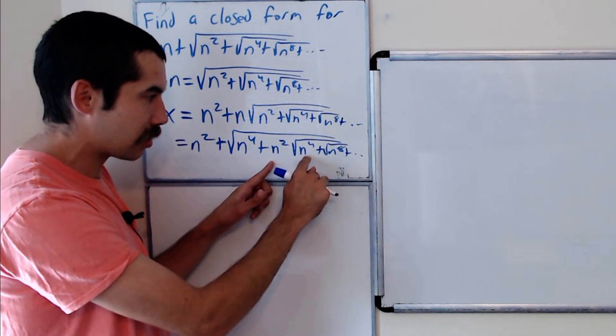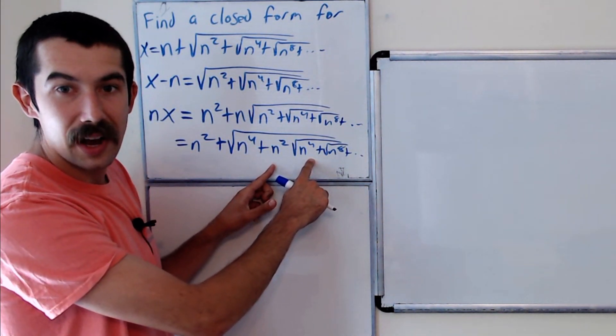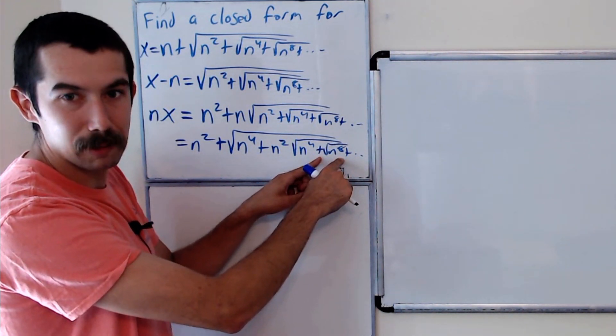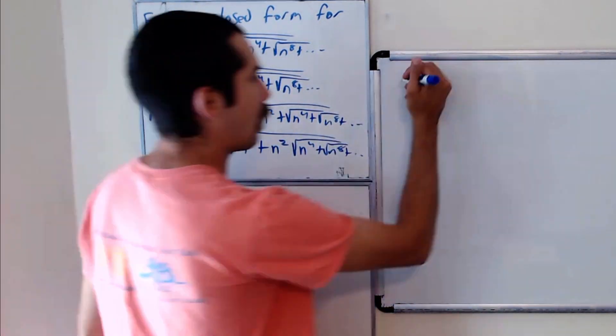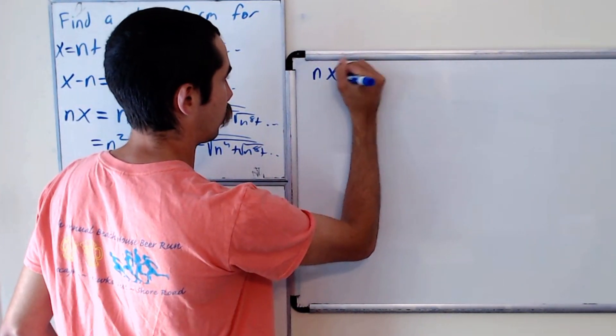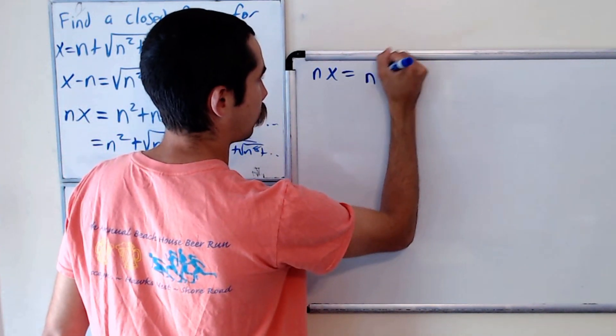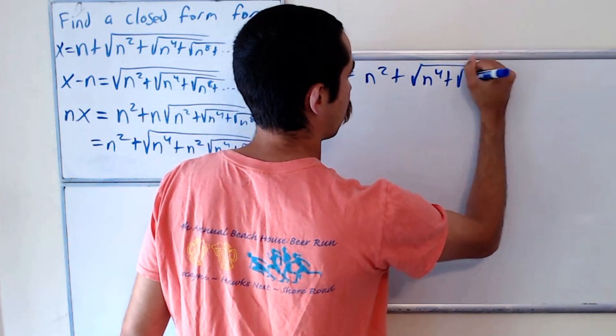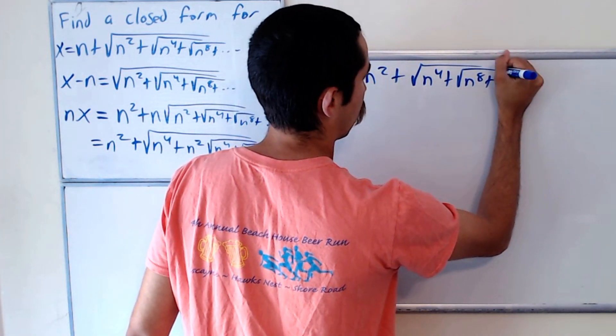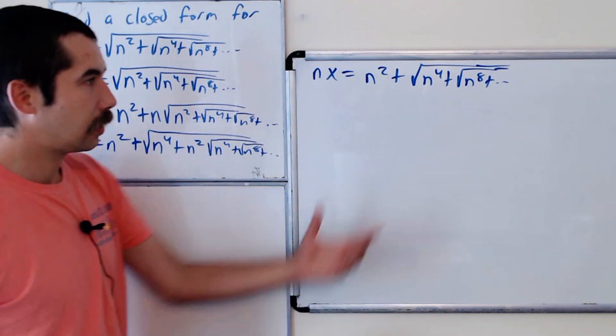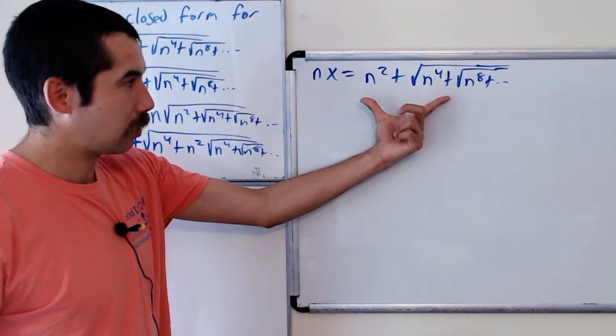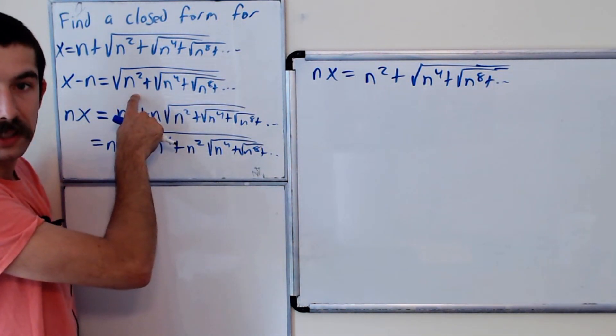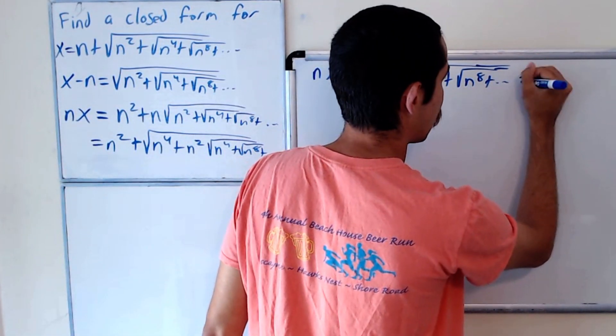But by a similar argument, this n squared goes inside the square root as an n to the fourth. And then it would get distributed here and that n to the fourth would go into the next square root as an n to the eighth and so forth. So we have n times x is equal to n squared plus the square root of n to the fourth plus the square root of n to the eighth plus and so forth. This looks like something we could deal with because it's exactly this term, but squared. This is equal to x minus n squared.